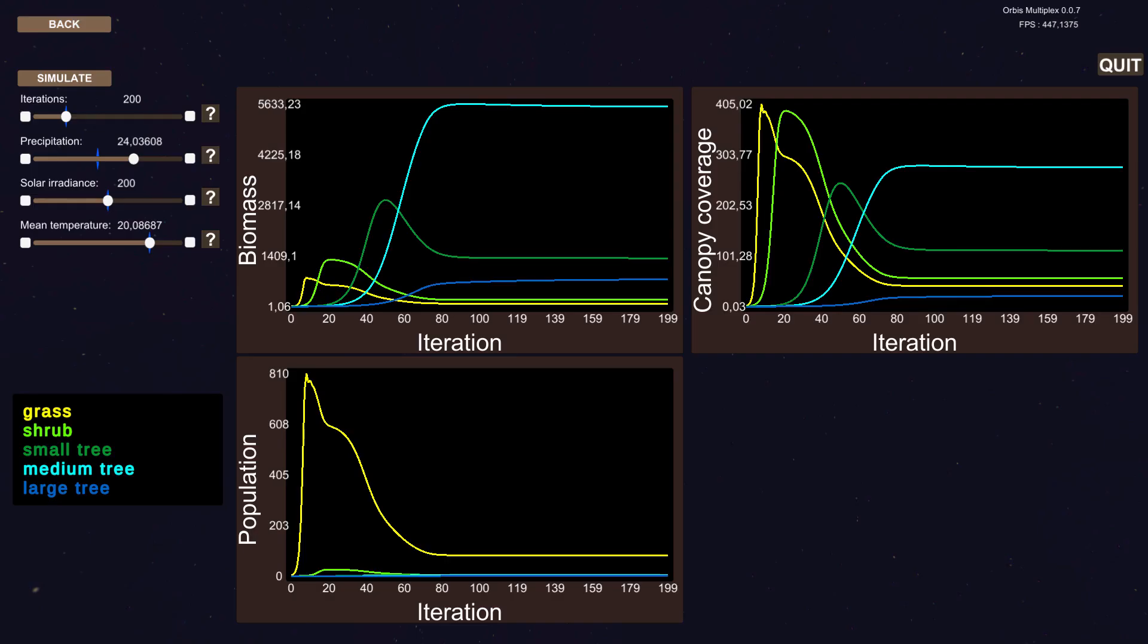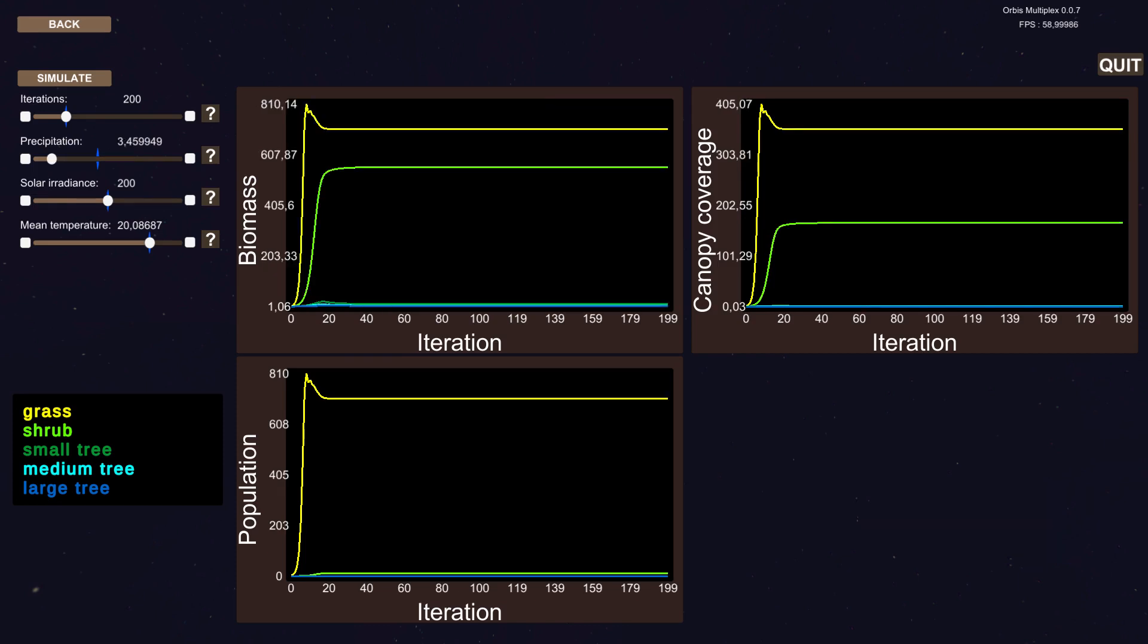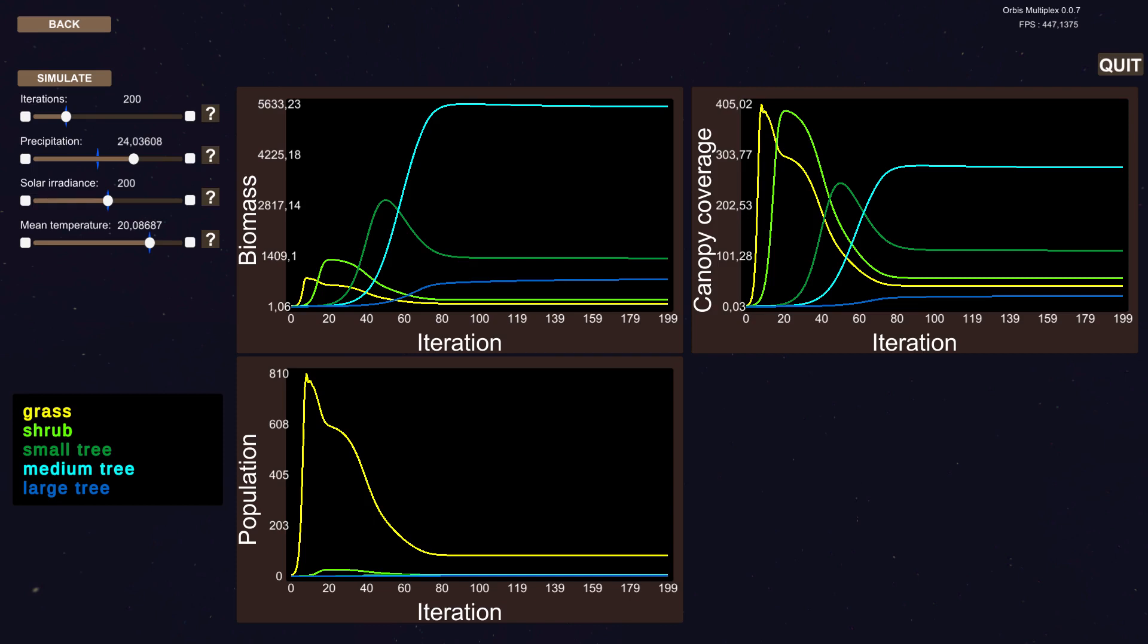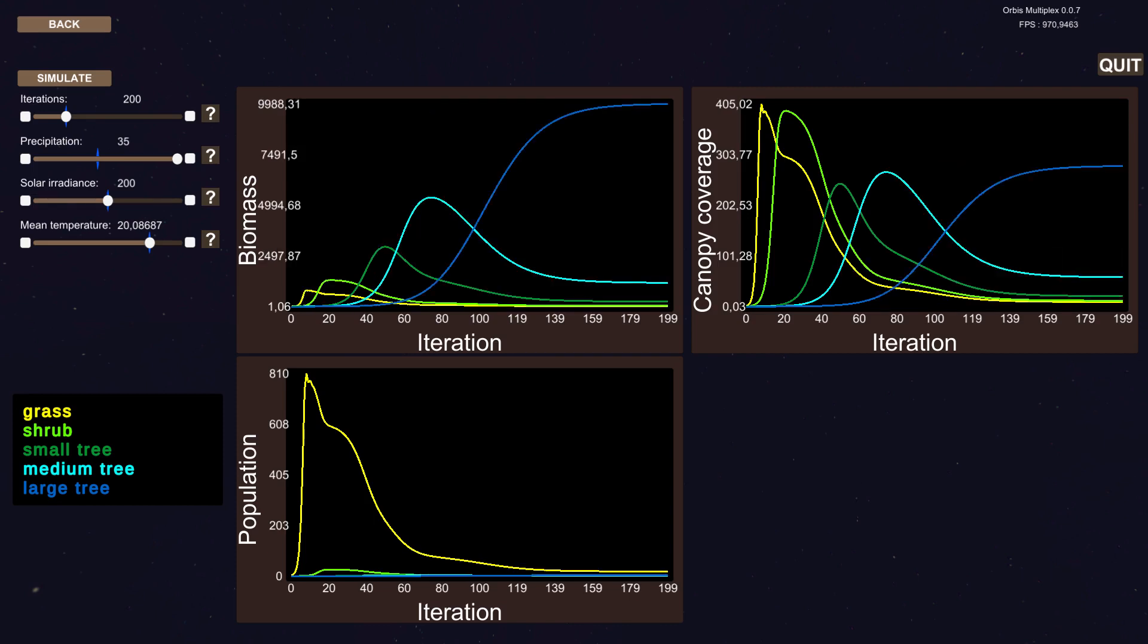We can now take a look at the results. These graphs show how the five different categories of plants grow for different settings. If I, for example, set the precipitation very low, only grasses and shrubs will thrive. Since they have a low water need, if I increase the precipitation slightly, trees start to grow. As the precipitation grows higher and higher, trees tend to dominate more and more, whilst grasses and shrubs decrease in number since they are being shaded.